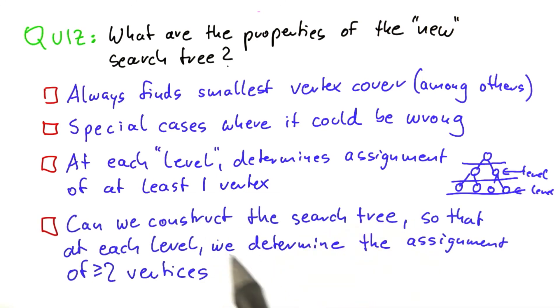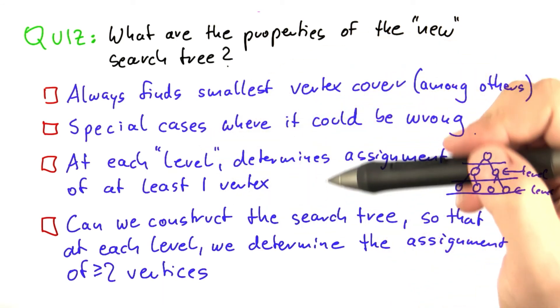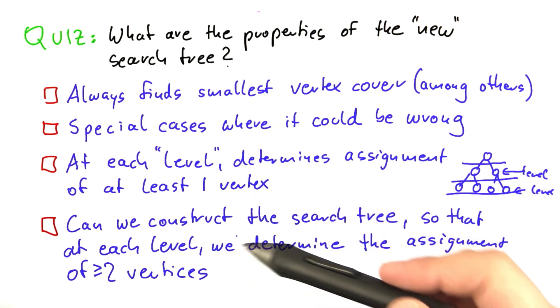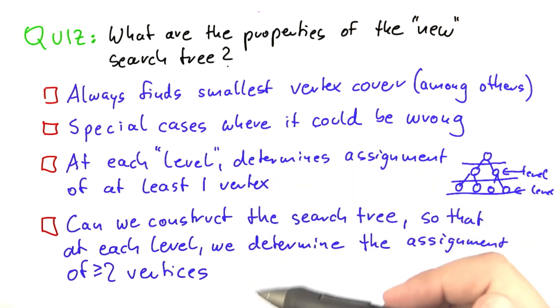And this will require some thought. So this is a challenging one down here. Can we construct the search tree so that at each level of the search tree, we determine the assignment of at least two vertices? And of course you could just guess here, but I would really like you to spend some time and think about the answers, because this will be very important for you to really understand how you can build better search trees.